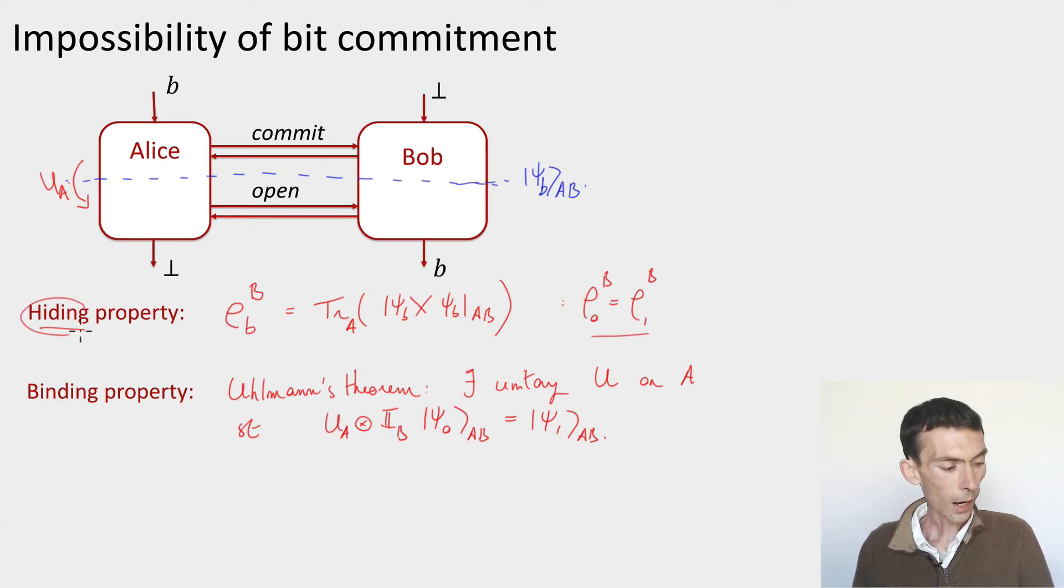So what we've seen is that hiding implies not binding. These two security requirements contradict each other. And as a consequence, bit commitment is not possible, even in the quantum case.